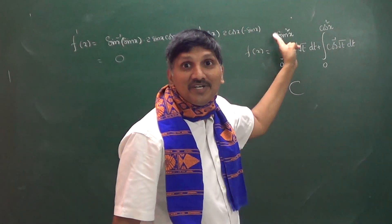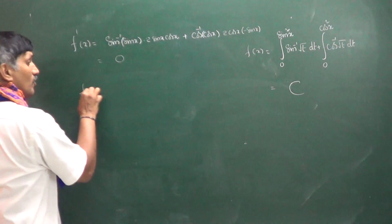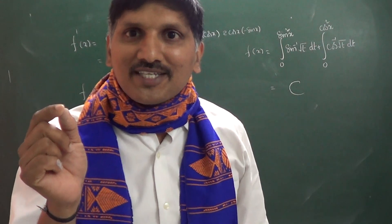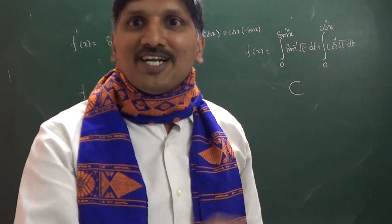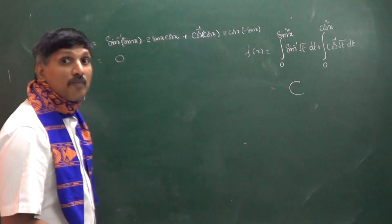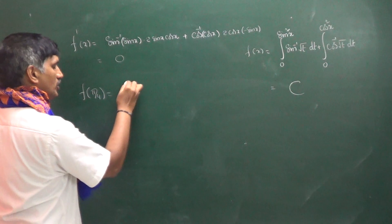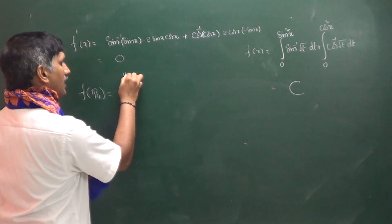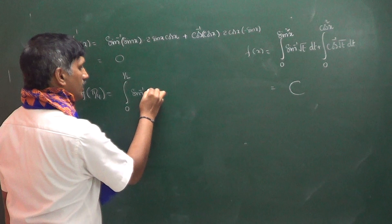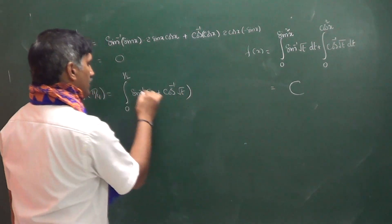At x = π/4, sin²(π/4) = 1/2 and cos²(π/4) = 1/2, so the limits are the same. We know that sin⁻¹x + cos⁻¹x = π/2. That result allows us to simplify. So f(π/4) equals the integral from 0 to 1/2 of sin⁻¹(√t) dt plus the integral from 0 to 1/2 of cos⁻¹(√t) dt.